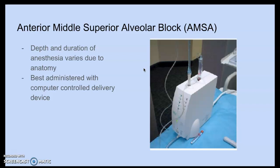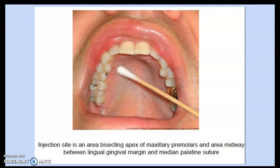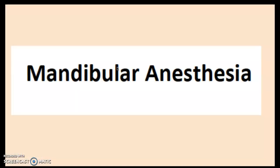Because AMSA involves variable depth and duration due to individual anatomy, a controlled computer device is used to administer it — also used in pediatric patients. The target area is the porous tissue of the hard palate. The injection site bisects the apices of the maxillary premolars, midway between the lingual gingival margin and the median palatine suture, with needle penetration at 45 degrees until tissues are penetrated.